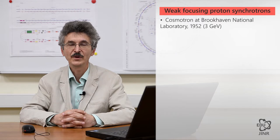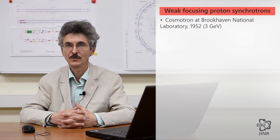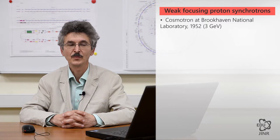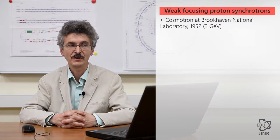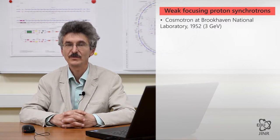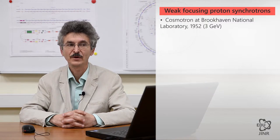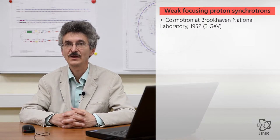The first large facilities, namely synchrotrons built with the use of phase stability principle, were the Cosmotron at the Brookhaven National Laboratory and the Bevatron at the Lawrence Berkeley National Laboratory, both located in the US.